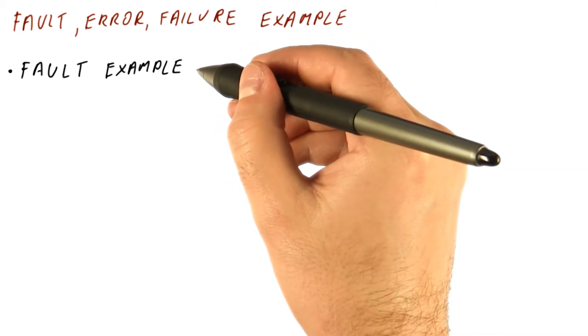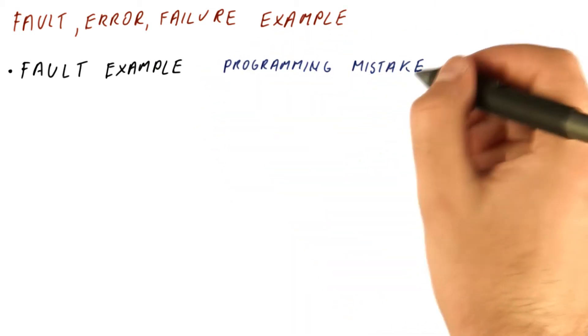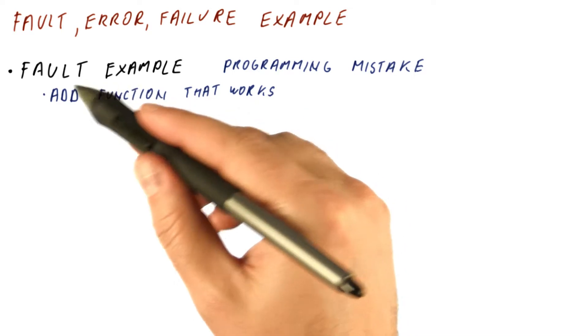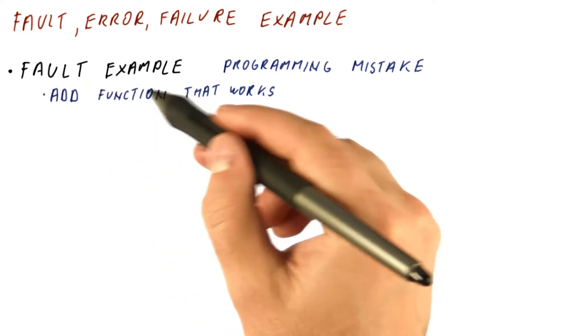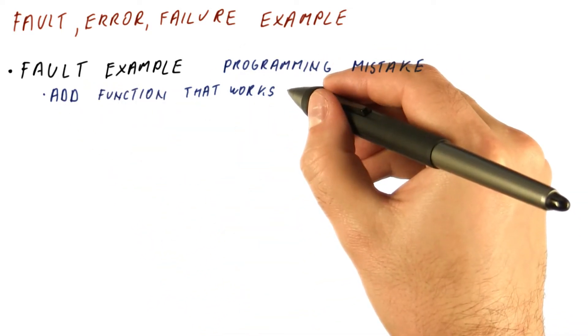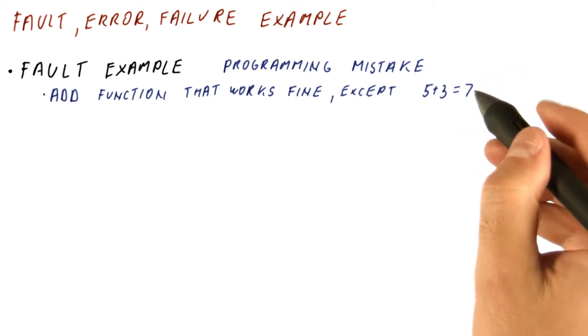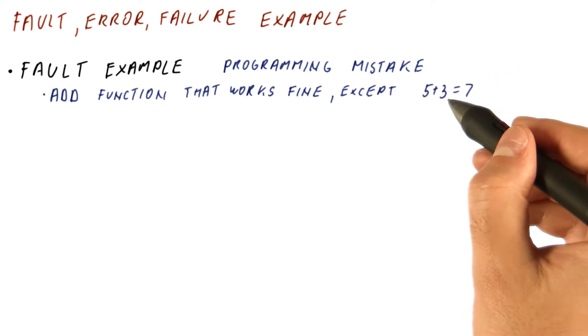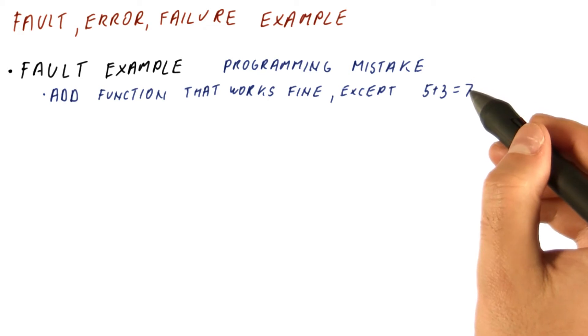Things always start with a fault. And our fault example is a programming mistake. Let's say that programming mistake is an add function that we wrote for our program that works just fine in all cases, except when we give it 5 and 3, in which case it returns 7 instead of 8.